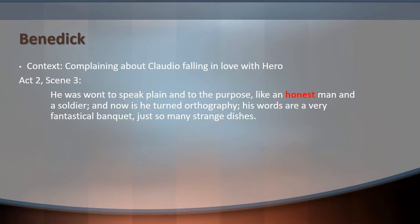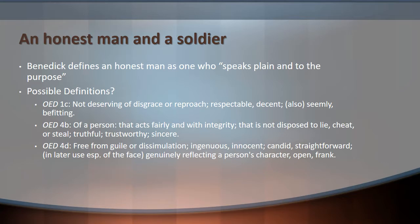Finally, let's look at Benedict. One of his uses of the word honest comes in Act 2, Scene 3, when he's complaining about Claudio falling in love with Hero — he can't believe his best friend used to be such a good soldier and now is all obsessed with this woman. One of the things he says is: Claudio 'was wont to speak plain and to the purpose like an honest man and a soldier,' and now 'he has turned orthography. His words are a very fantastical banquet, just so many strange dishes.' Here is probably the most conventional use of honest in the play — Benedict defines an honest man as one who speaks plain and to the purpose.